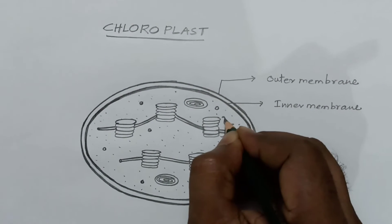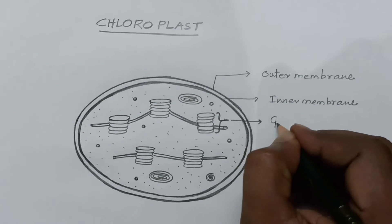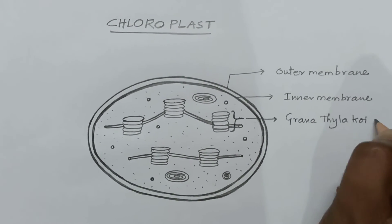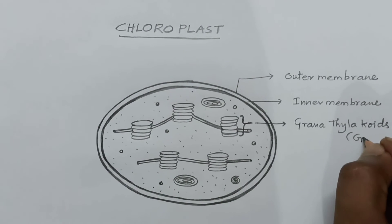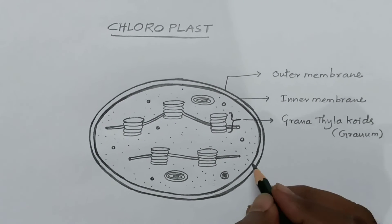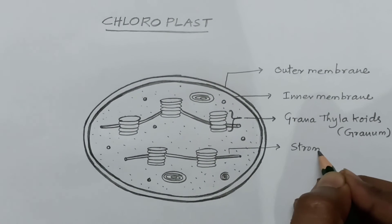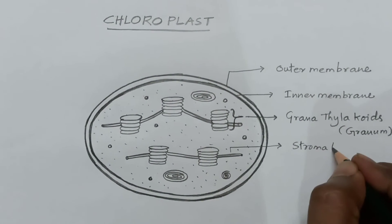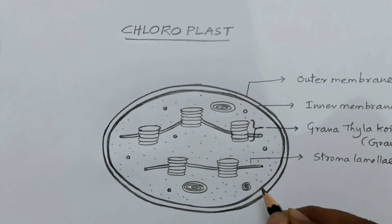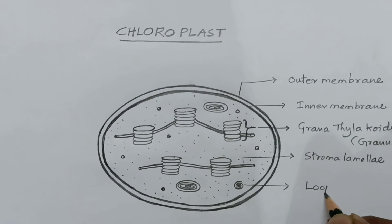The piles of coins are known as grana thylakoids. A single unit of a thylakoid is called a granum. These connecting structures are stroma lamella. This is the loop of DNA.